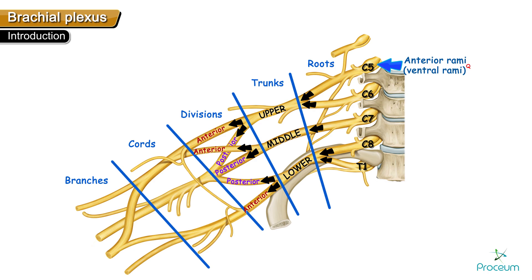All the posterior divisions unite to form the posterior cord of the brachial plexus. The anterior divisions of the upper trunk and the middle trunk unite to form the lateral cord. The anterior division of the lower trunk continues as the medial cord of the brachial plexus.